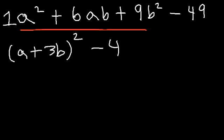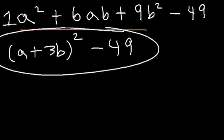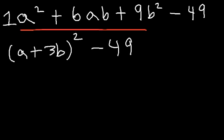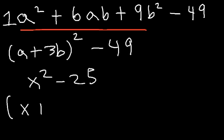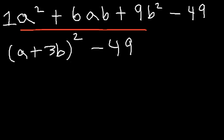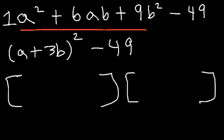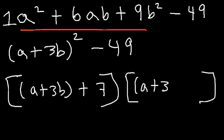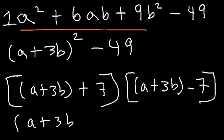We still have negative 49 on the right side. Recall how you'd factor x squared minus 25 using difference of squares — it's (x + 5)(x − 5). We have a difference of squares situation here as well. The square root of (a + 3b)² is simply (a + 3b), and the square root of 49 is 7. So the final answer is (a + 3b + 7)(a + 3b − 7).